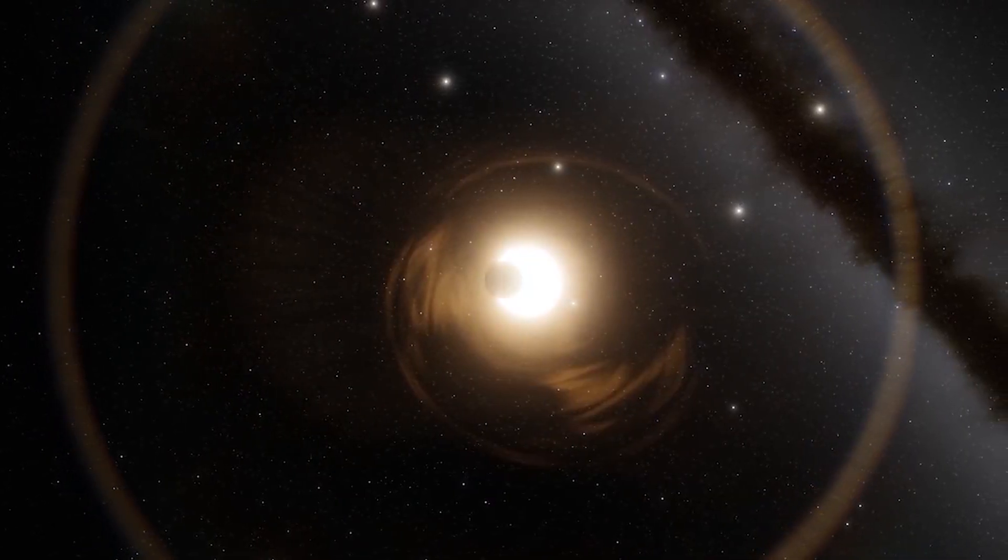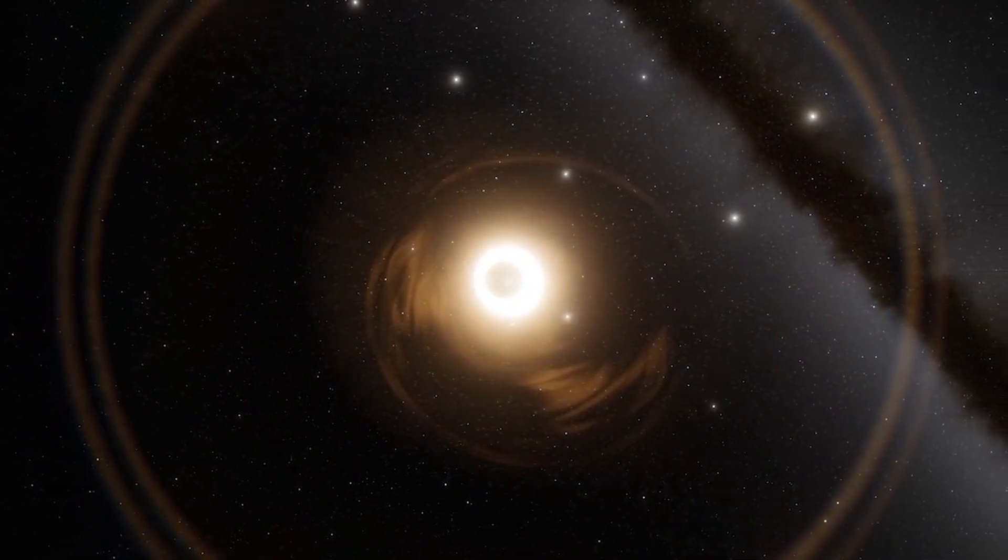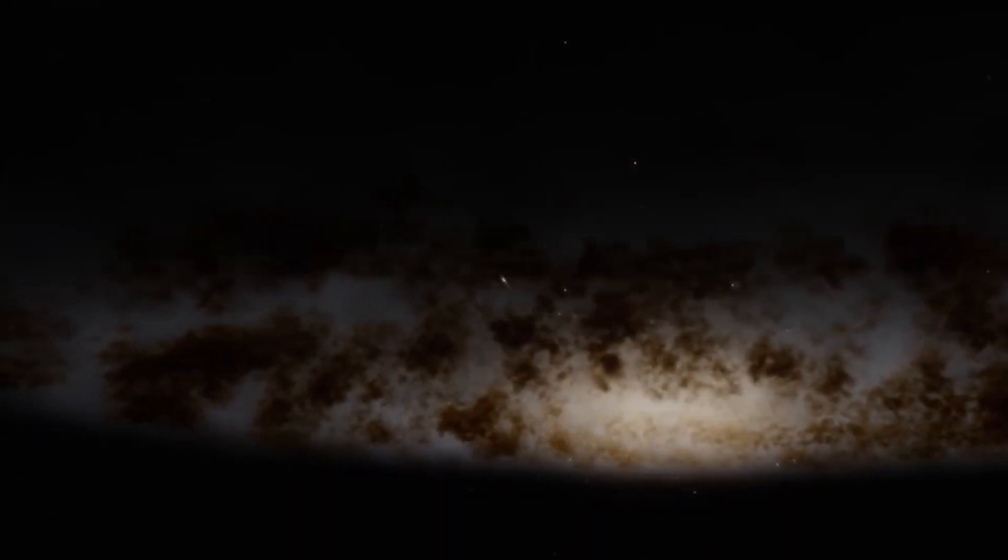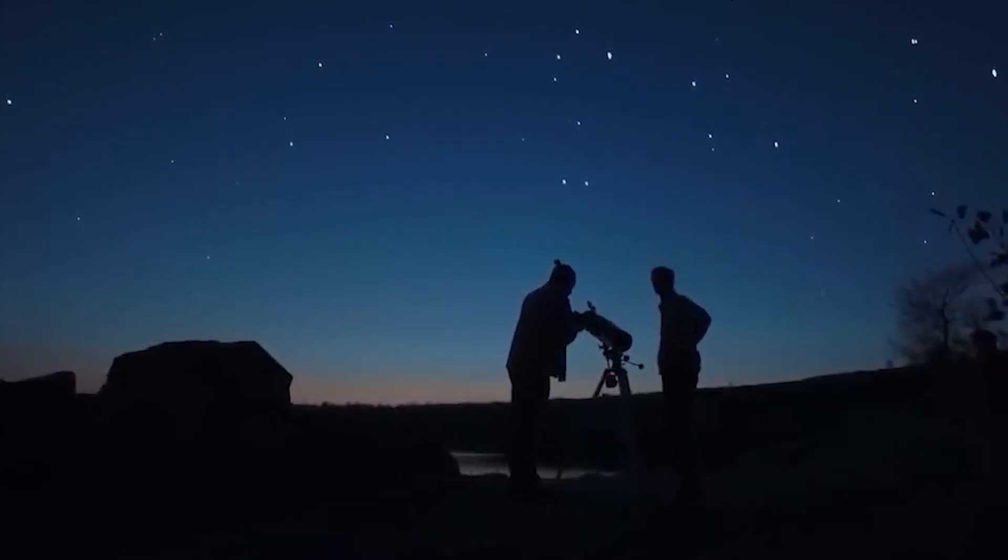We'll use our sun as a point of comparison, as we all have a lot of familiarity with it, as opposed to Betelgeuse, Antares, and Mu Cephei. To highlight the discrepancies, we contrast their differences. The stars are all red supergiants. Their distinctive characteristics set them apart from one another. One of the three stars' main differences is size.